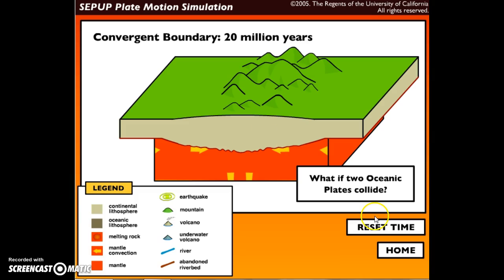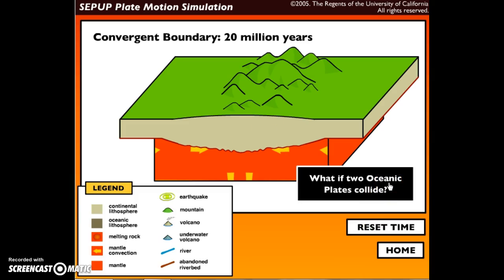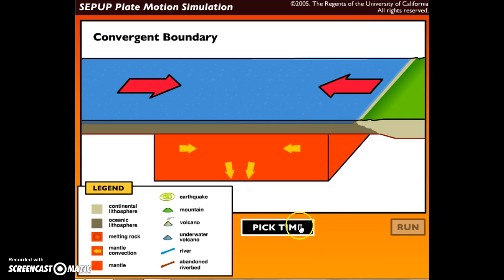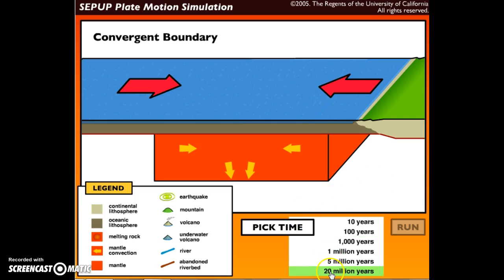Now let's see what happens when two oceanic plates collide. Previously was two continental plates. Obviously we're going to pick 20 million years, look at the legend, become familiar with it, and we're going to hit run.